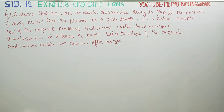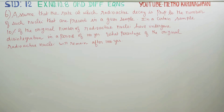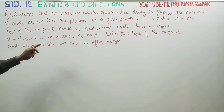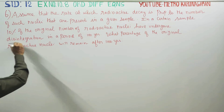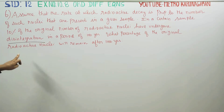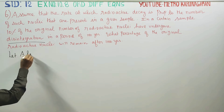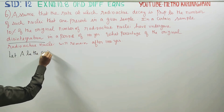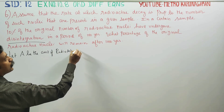Dear 12th standard students, in exercise number 10.8, sum number 6: assume that the rate at which radioactive decay occurs is proportional to the number of nuclei present in the given sample. In a certain sample, 10% of the original number of radioactive nuclei have undergone disintegration in a period of 100 years. What percentage of the original radioactive nuclei will remain after 1000 years? Let A be the amount of radioactive material at any time T.